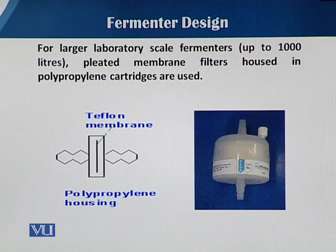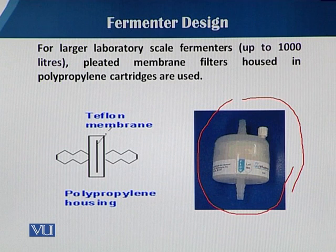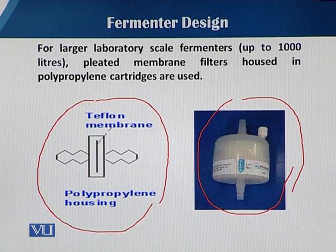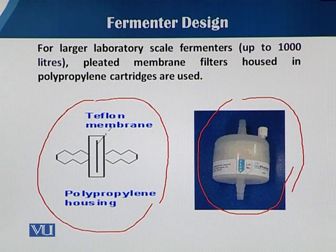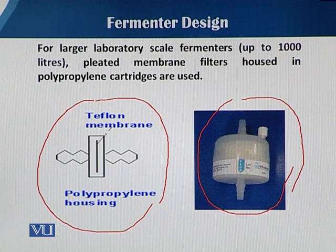You can see in this slide the teflon-type filter and how it is designed. It has a teflon membrane inside, and this whole membrane is packed within a polypropylene housing, because polypropylene can withstand its shape and quality under sterilization — we have to autoclave it before use. This type is mostly used up to 1000 liters.